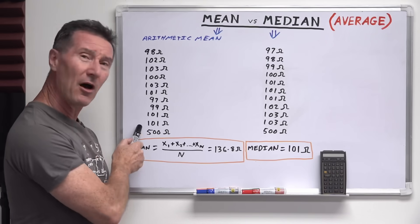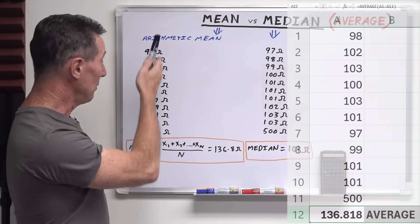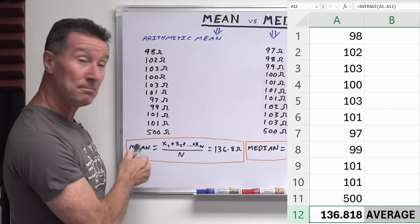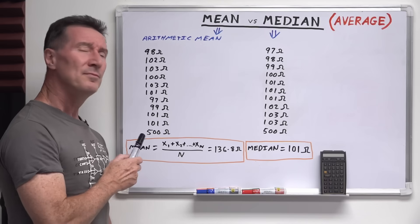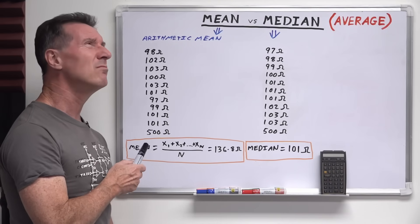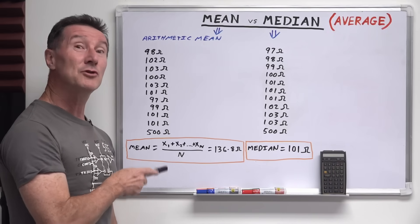So we get 98 ohms, 102, 103, 100, 103, 101, 97, 99, 101, 101, and 500 ohms. So 11 different values, you get the mean or the average of those, it's 136.8. Can you smell what I can smell? Yeah. Dodgy data.